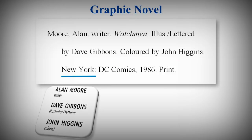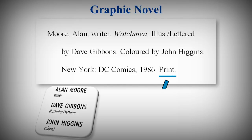Then enter the city of publication, followed by a colon. There's no need to include the state or province. Then the publisher's name, followed by a comma, and the year of publication, followed by a period. Finally, indicate the medium of publication. Medium refers to the format. For graphic novels, the medium would be print.